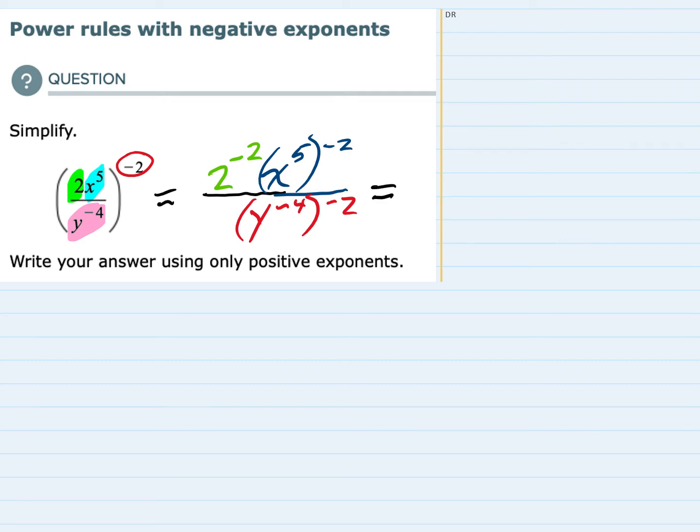Going through them I have 2 to the negative 2. For now I'm just gonna leave that in the numerator. But for the x's I'm gonna use the power rule that says when you have a variable raised to the power and that is raised to another power, we keep that variable x. And the power inside and the power outside get multiplied. So that's gonna be a negative 10.